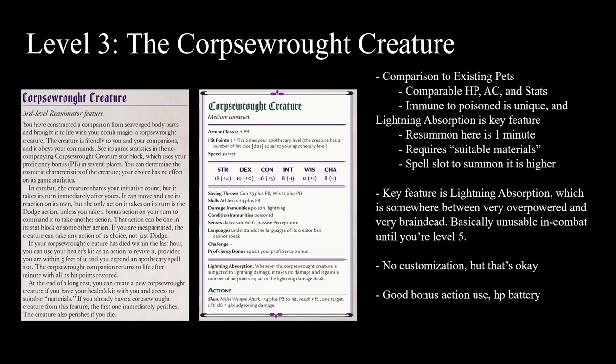The Reanimator Apothecary gets Spark of Life for free at 1st level. There are some drawbacks: the Corpse Art creature only comes back one minute later, while all other pet subclasses come back in one action. It requires suitable materials, which could be a serious nerf with a vindictive DM. And because you're a Warlock-style caster, the spell slot you spend to summon is higher — a 7th level Apothecary spends a 4th level slot, while a 7th level Drakewarden only spends a 1st level slot. However, you can short rest to get that slot back.